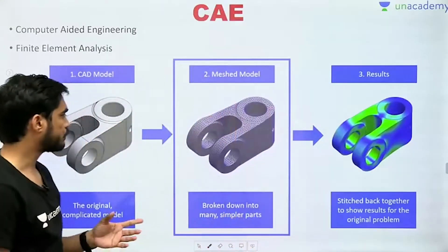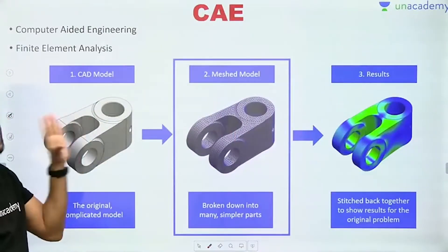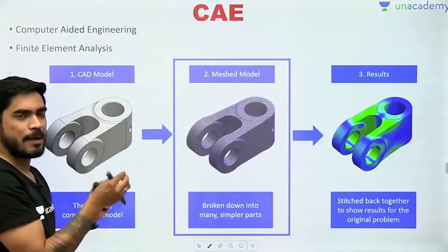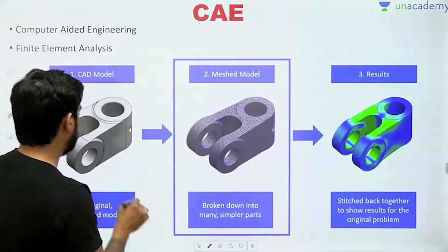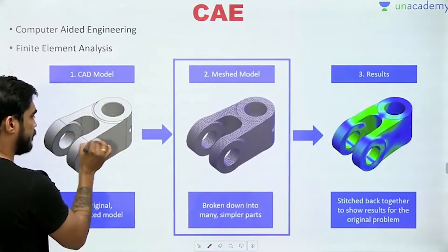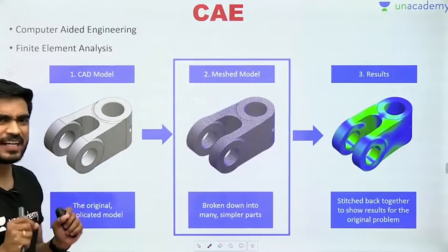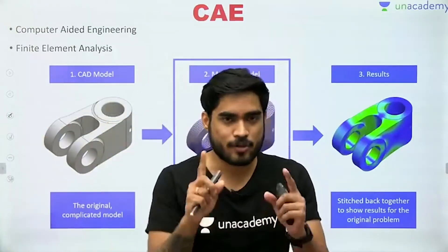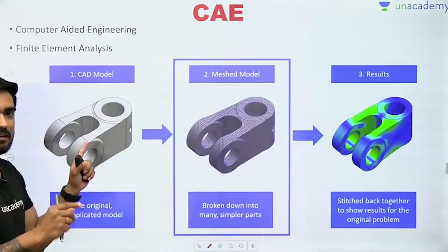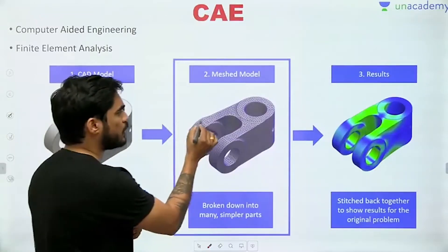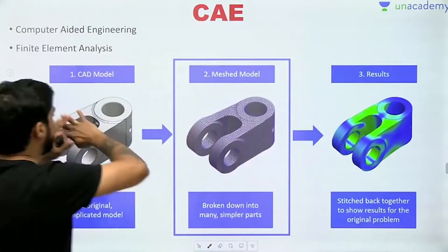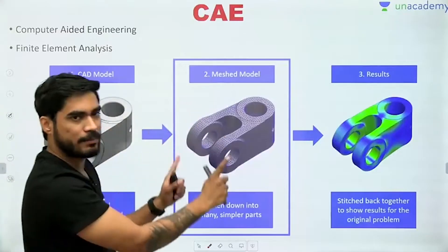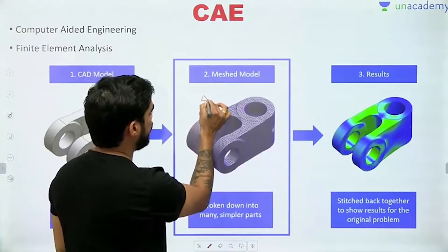Let's say you have a CAD model and you have to perform some test on it — you apply a load and see what the stresses will be. The problem is there are infinite points on this body, and it is very difficult to calculate stresses at infinite points. So, in order to calculate stresses, we divide the body into very small elements — moving from an infinite surface to a finite model with small, finite elements.